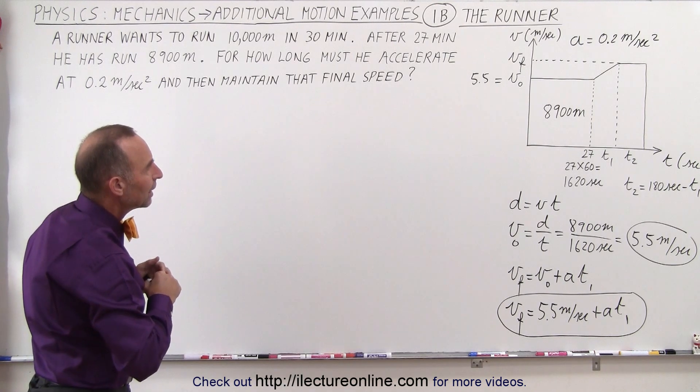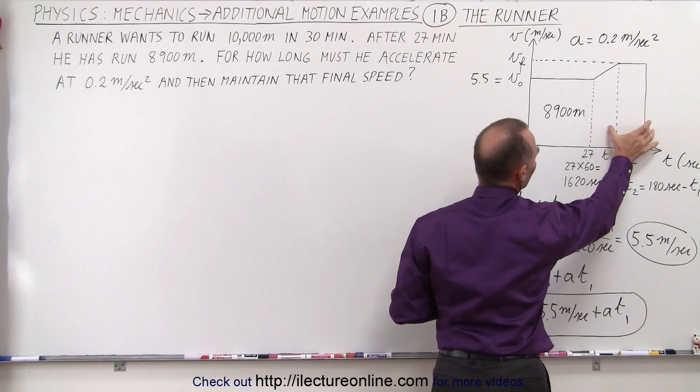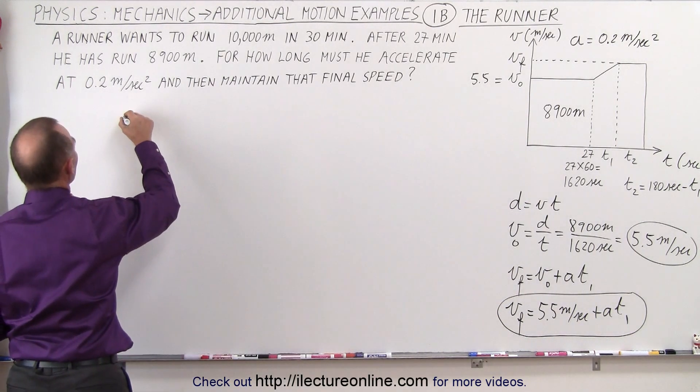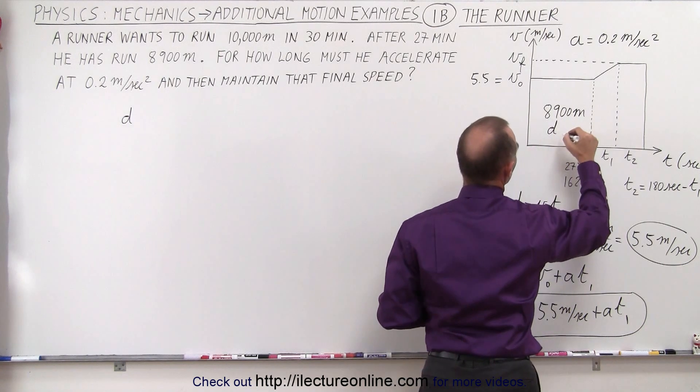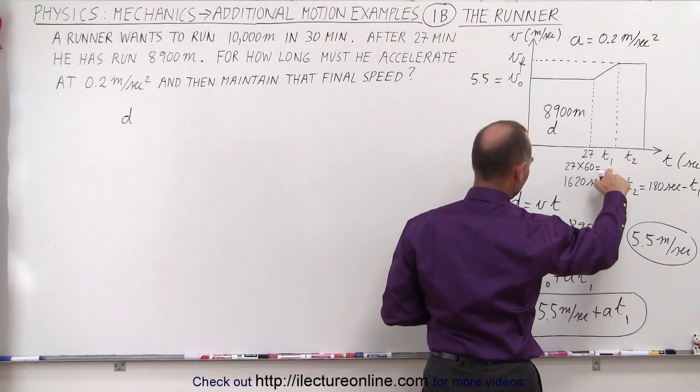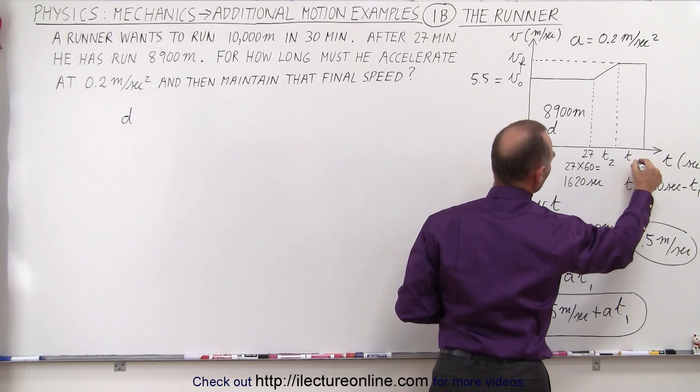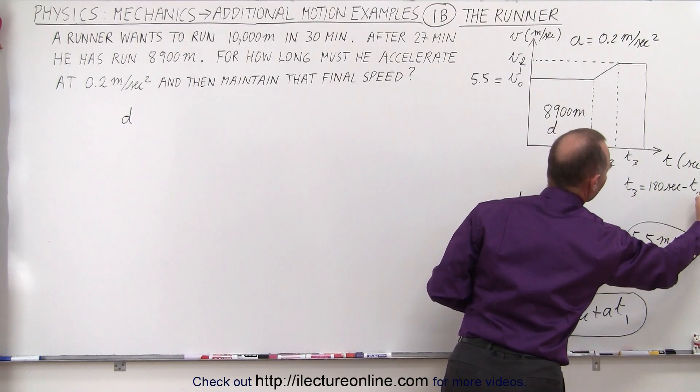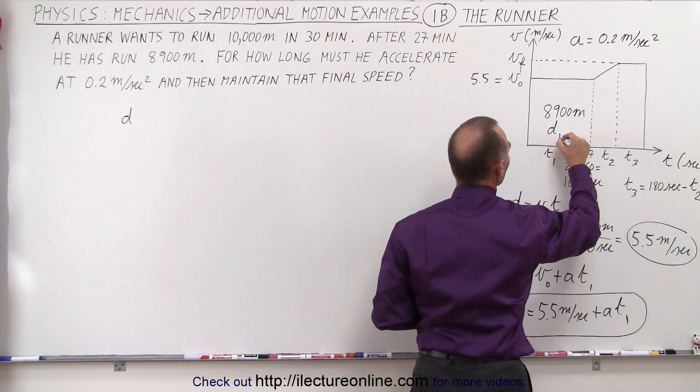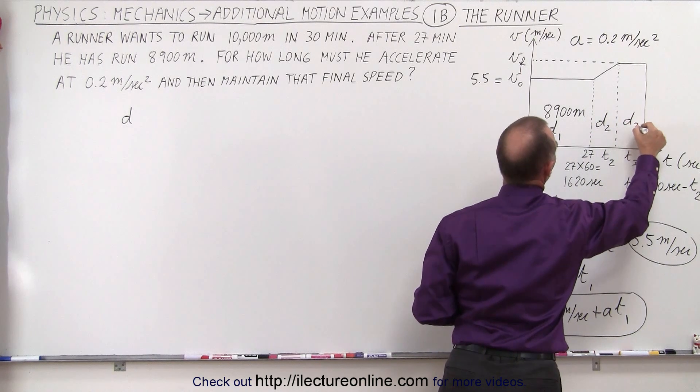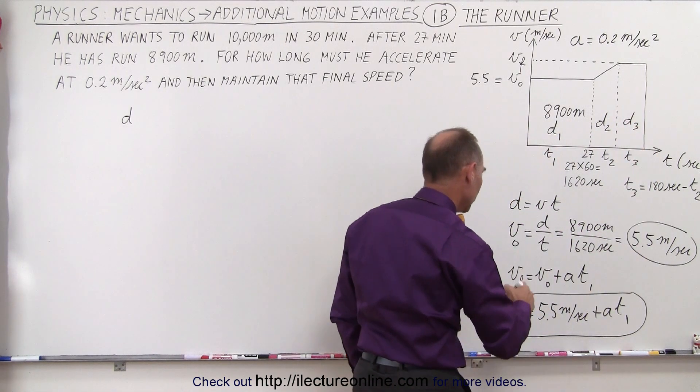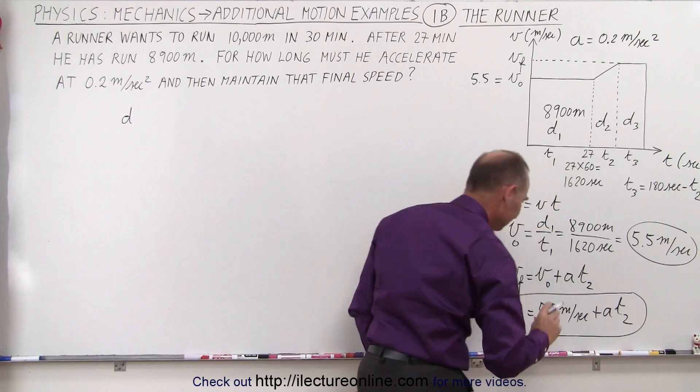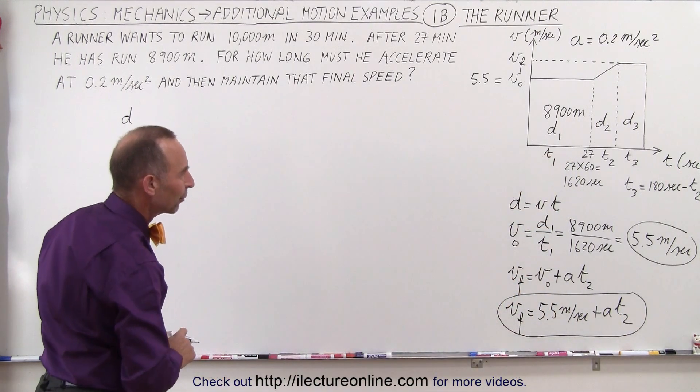Now the next thing we want to do is realize that during this time period and this time period together, he covers a distance of 1100 meters. So in other words, we can say that the distance covered, let's call this distance 1 right here, or let's call this, I call this T1, didn't I? We'll call this T2 and T3. So T3 is equal to 180 seconds minus T2. We call this here T1, which is 27 minutes. So call this D1, call this D2, and call this D3. So we keep our subscripts in a way that we can follow what we're doing.